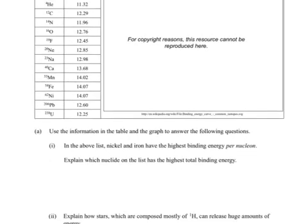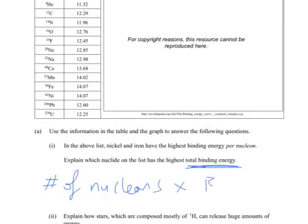Binding energy per nucleon is the amount of energy required for a single nucleon to be removed. But we're after the total binding energy, which is the total energy required to separate all of the nucleons. So that's going to be the one which has the highest multiple of the number of nucleons times by the binding energy per nucleon. So that'll give us the total. Number of nucleons times binding energy over number of nucleons is going to give us the total binding energy.